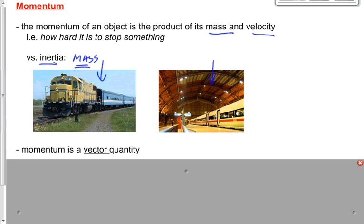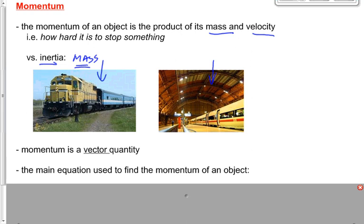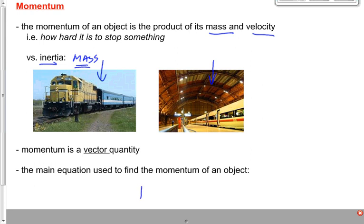Momentum is a vector quantity, which means it has both magnitude and direction. The equation we use to describe momentum comes from the definition: momentum — a lowercase p with a half-arrow indicating it's a vector — is equal to mass times velocity, M times V. A scalar times a vector always gives us a vector.